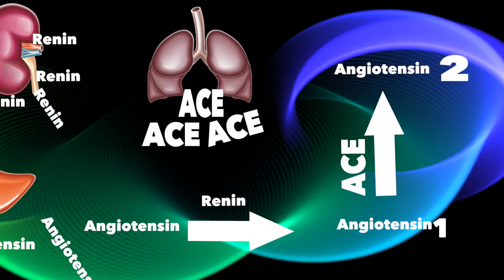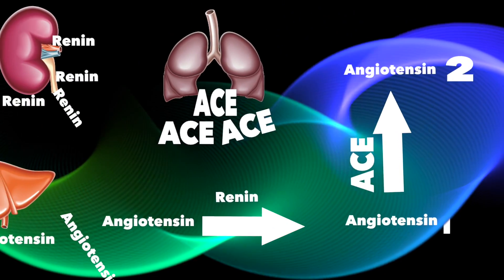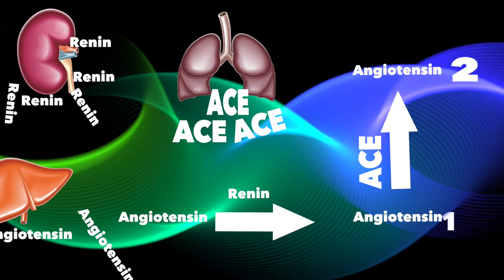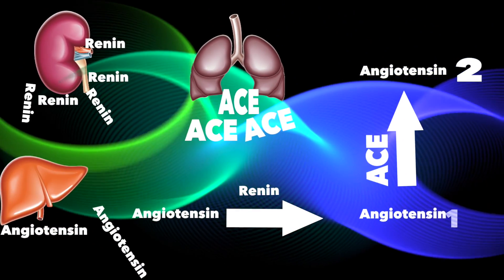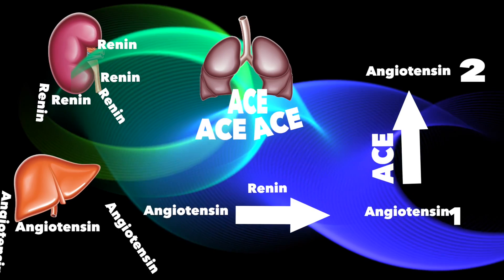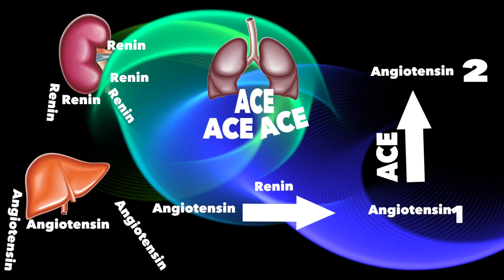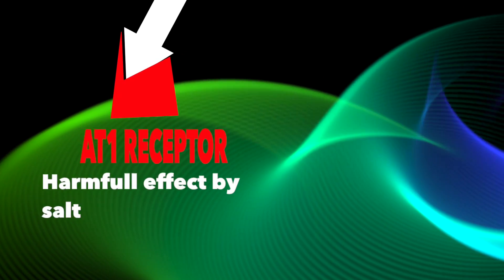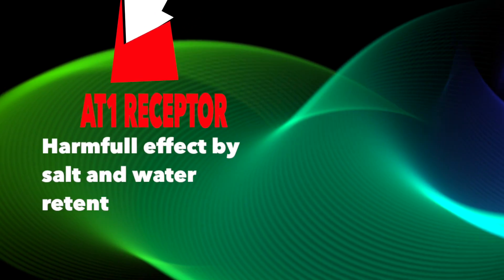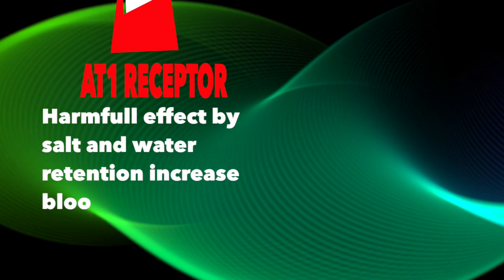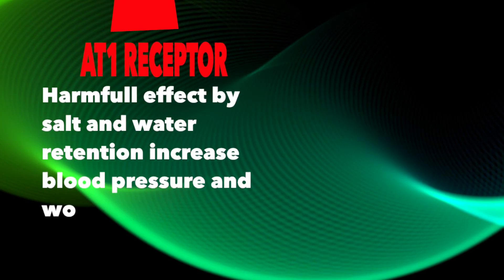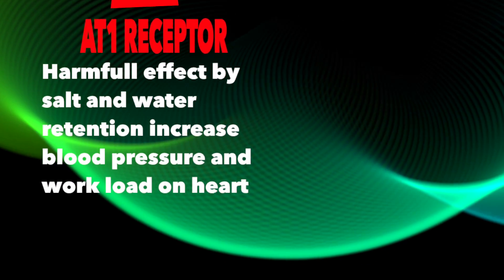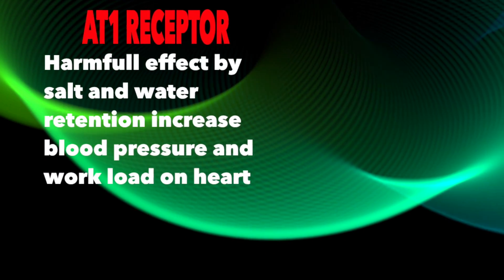Now let's talk about the action of angiotensin 2. It is mediated by two receptors. AT1 causes salt and water retention, which is a harmful effect, and is blocked by valsartan.